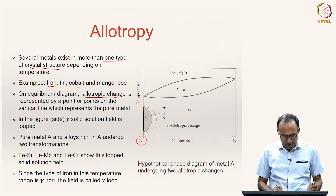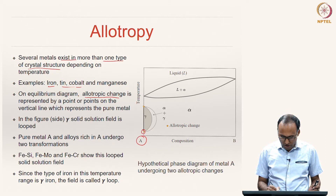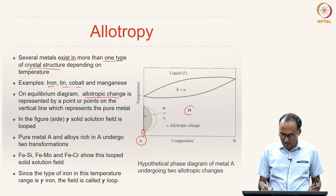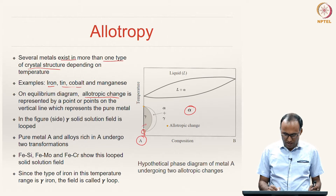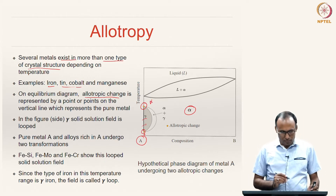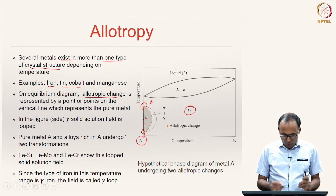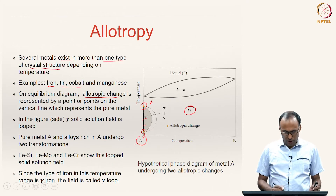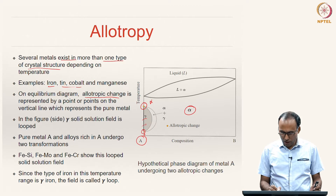For instance, if you take pure metal A, the orange point represents the allotropic change — below this point the material has an alpha phase (one particular crystal structure), and above it changes to gamma phase. Between the two orange lines the material is in the gamma phase, and above that the solid is again in the alpha phase. So alloys rich in A undergo two allotropic transformations.